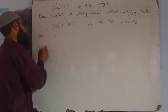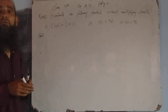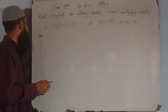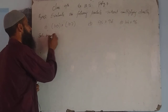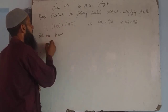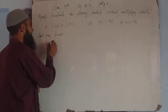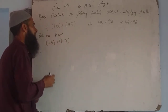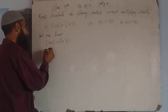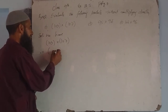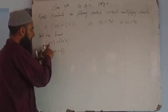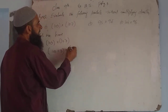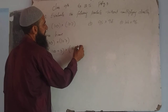This product is solved by using suitable identities. This product can be written as (100 + 3) into (100 + 7), that is 103 into 107.